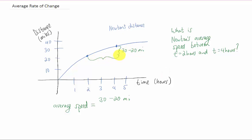How did you get two hours? Well, you subtracted four minus two. You realize that he had traveled a total of 10 miles in a total of two hours. Divide 10 by two, and you get five miles per hour.